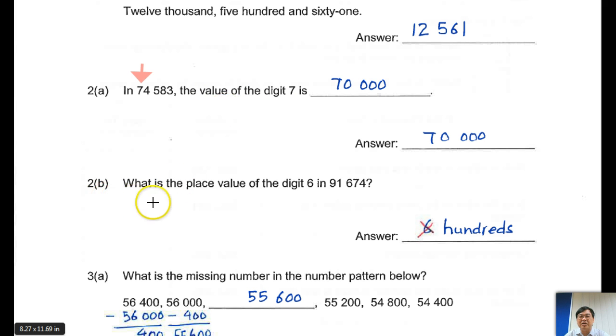Let's go to 2B. What is the place value of the digit 6 in 91,674? Now I realize that the place value, it means at over here, 6, exactly over here. It's not the value. If it's value, then it's 600. So the place, you just put hundreds. If it's 7, you put tens. If it's 4, you put ones. Over the digit 1, then you put thousands.